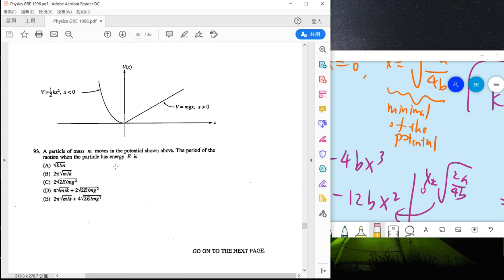Okay, so problem 93 says that a particle of mass m moving in potential, and find the period. Okay, suppose you have energy E. From the right-hand side, basically it's a harmonic oscillator, so the period is just 2π over square root of m over k. But we only have half, so we have this plus the gravitational force.